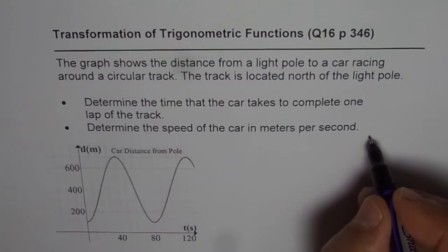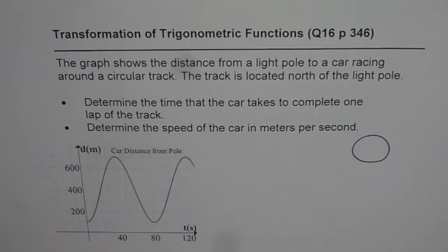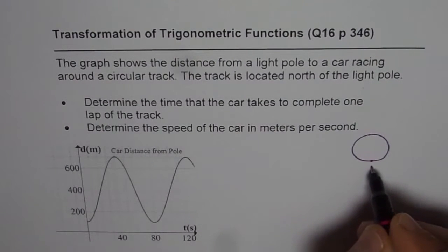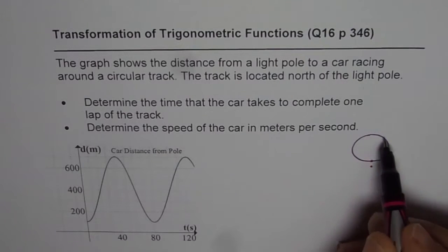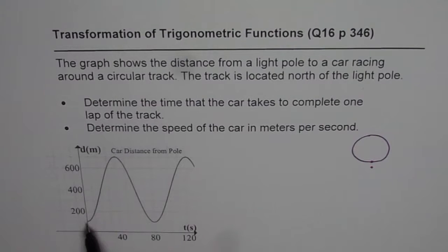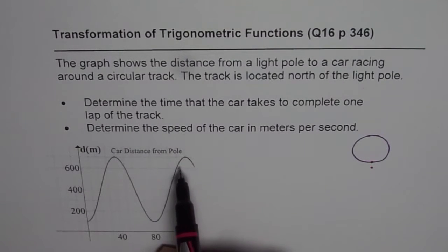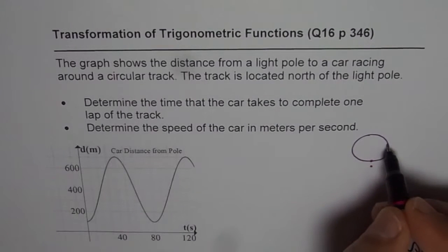In this particular situation, what we have is that we have a track here along which the car is moving and let us say this is the initial position. Here is a pole, which says now the track is to the north side of the pole. That is how the situation is and the distance is given to us in the form of the graph. That I think will help you to understand this situation.